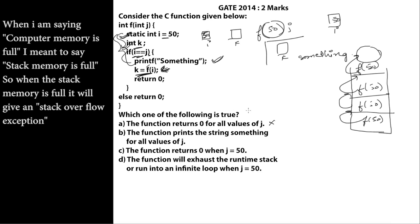Option b says the function prints the string 'something' for all values of j. This function only prints 'something' when j equals 50, not for all values of j. So this statement is also wrong.